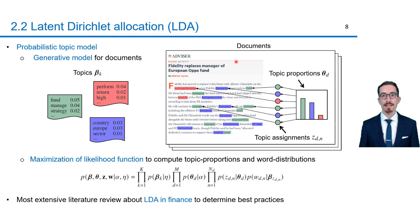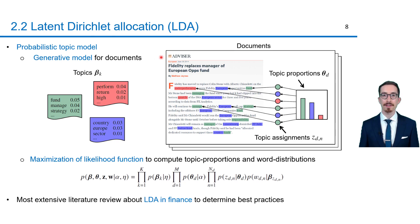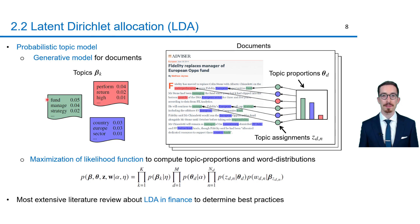This process is illustrated on this slide by an article of the Financial Advisor, which is included in the corpus that will be analyzed afterwards. These lists show the words with the highest probability within these topics. Hence, the green topic seems to be about fund management due to the words fund, manage, and strategy.